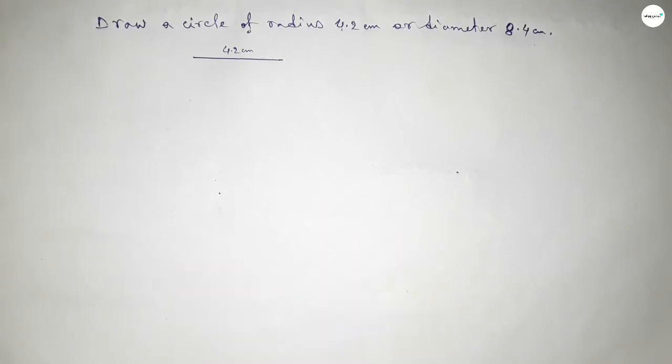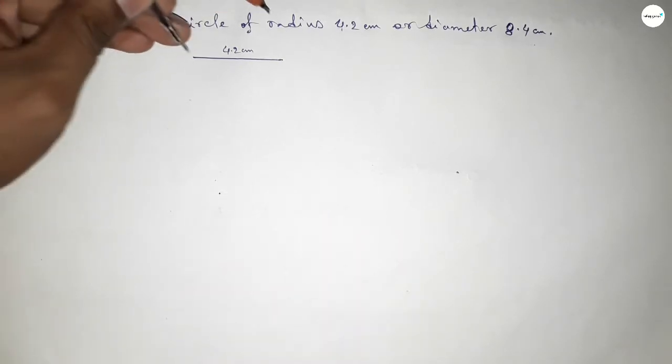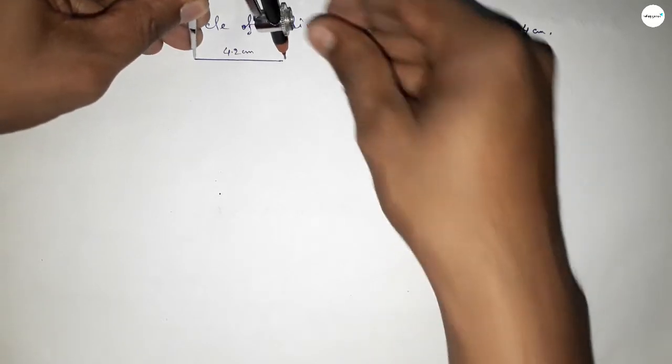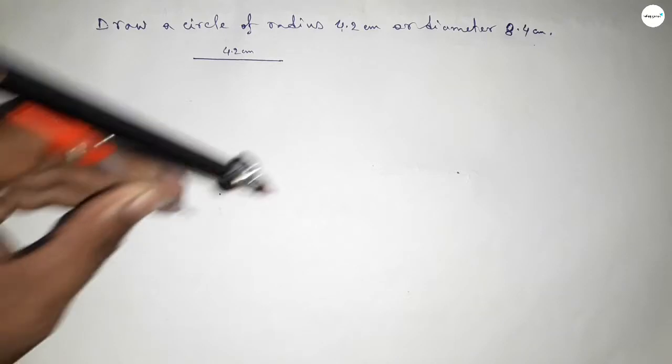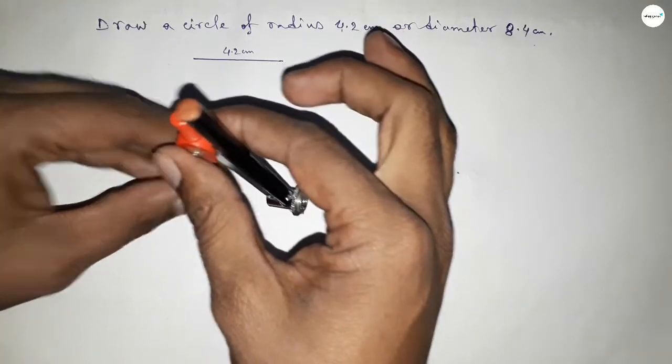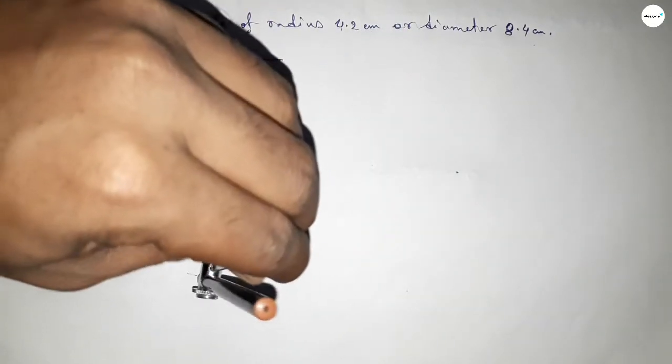Now taking any point here. Next, taking the length 4.2 using a compass and putting the compass on this point, then drawing an arc.